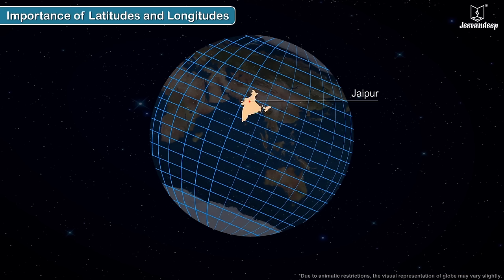For example, locating Jaipur on the globe is not difficult at all. All we have to do is to find out the latitude closest to Jaipur, which is 26.92 degrees north, and the longitude closest to it, which is 75.82 degrees east.